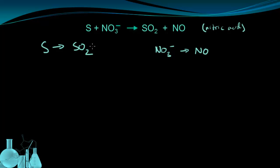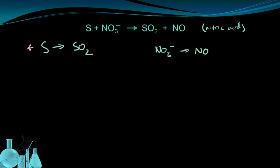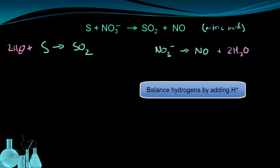The S is already balanced and the nitrogen is already balanced, so we only have to worry about oxygens. Our method for balancing oxygens is to add waters. For the sulfur to SO₂ reaction, I have two oxygens that need to be balanced, so I write in two waters on the other side. For the other reaction, I also need to add two oxygens, but this time to the product side, so I add two waters there. That gives me three oxygens on the right and three oxygens on the left. Now every time you add waters, you also have to balance those waters because they add extra hydrogens.